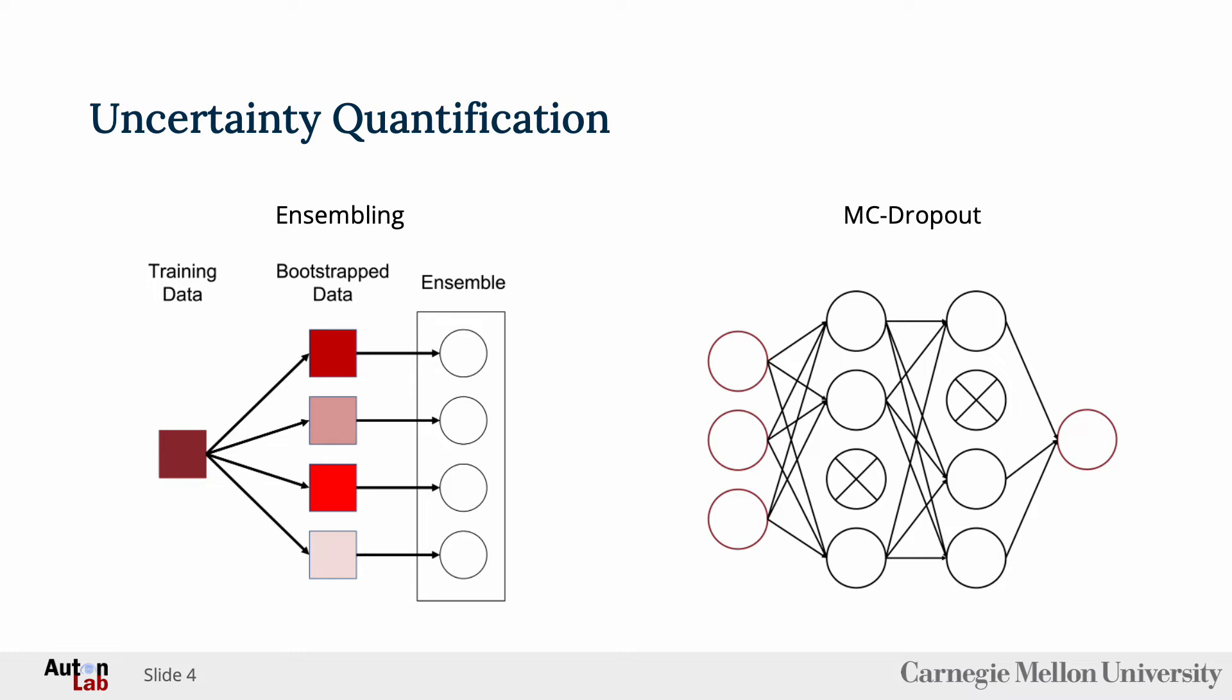The second method is Monte Carlo dropout, or MC dropout. This method involves training a single model, but with dropout layers applied. These dropout layers cause the model to act as a different model each forward pass through the network since a random percentage of nodes will be dropped out each time. By gathering outputs from multiple forward passes through the network, we can quantify the uncertainty of the model.